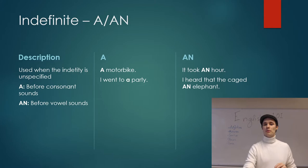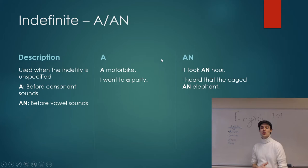If you move over to 'an': 'it took an hour,' 'I heard that they caged an elephant.' If you would try to switch it around and instead remove the 'n' and say 'I heard that they caged a elephant,' you kind of stutter.